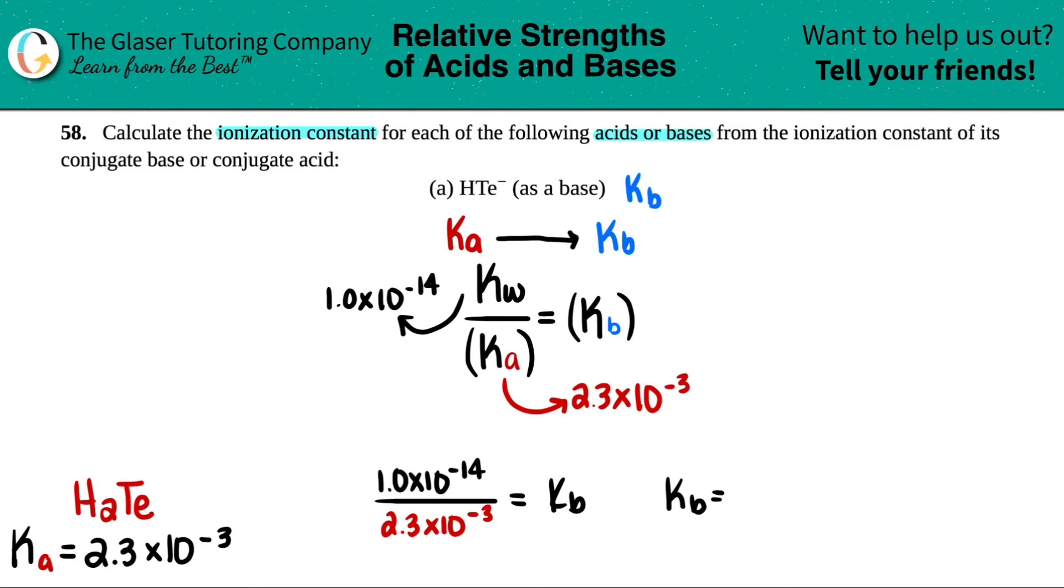So let's see. Kb equals 1 times 10 to the negative 14th divided by 2.3 times 10 to the negative 13th.